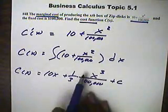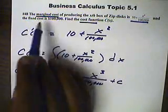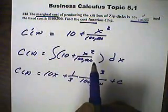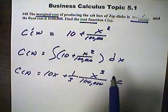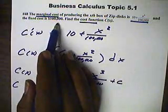Now, what we know about this is that if the fixed cost is $100,000, that means when nothing is made, x is zero, the items is zero, the cost is going to equal zero—or the fixed cost, should I say, is going to equal $100,000.